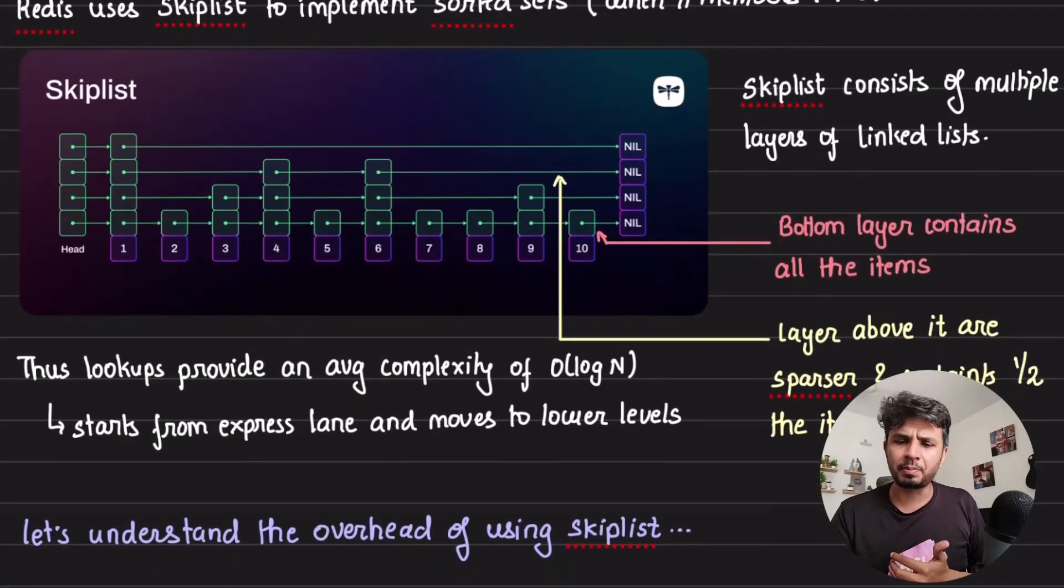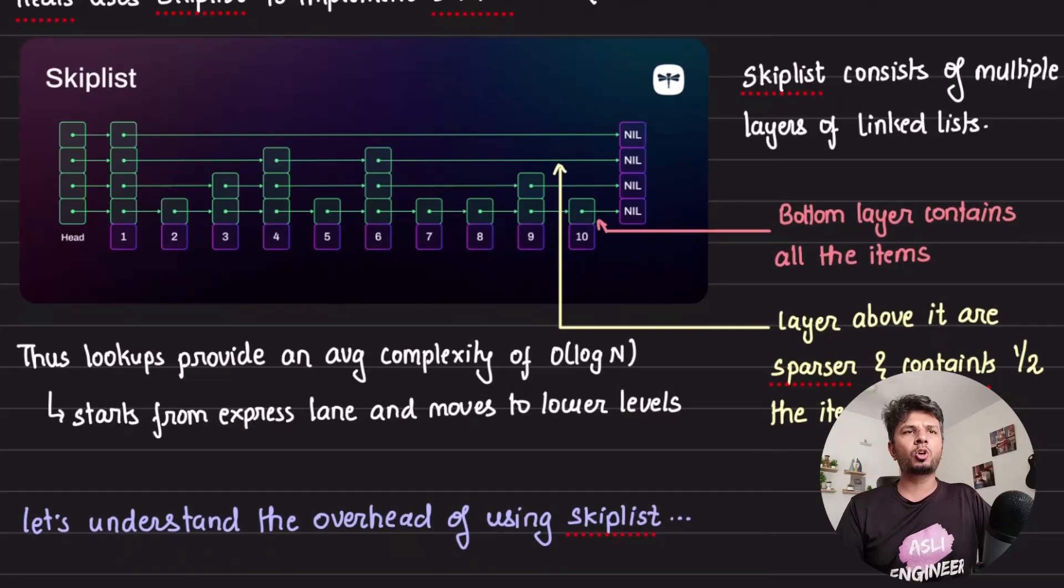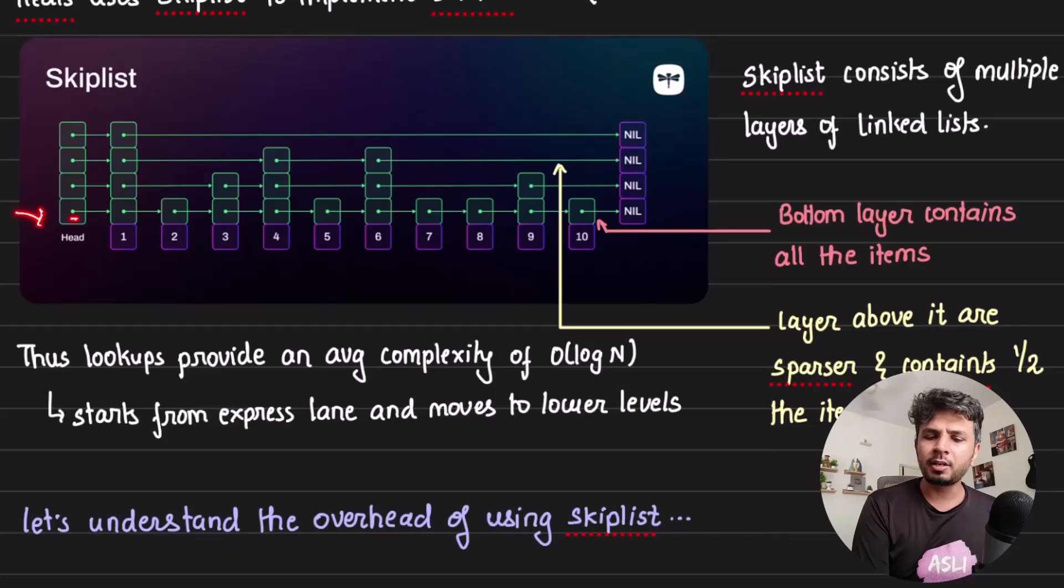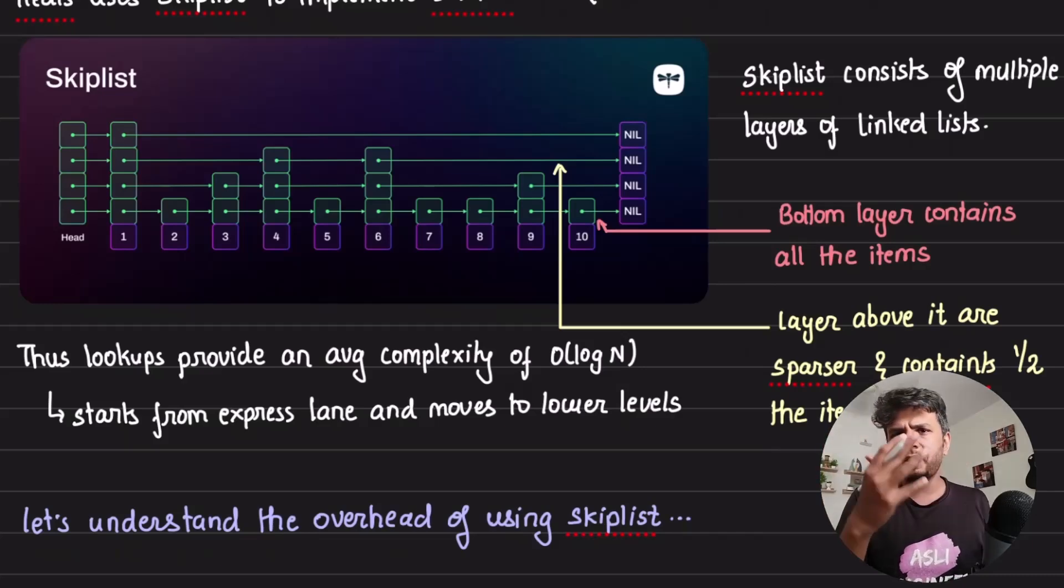Skip list as a data structure implementation is very common to implement sorted sets. The whole idea is that in a skip list you have a bottom layer where all the elements are stored in the form of a linked list. If you do a very naive implementation, your lookups become O(n), although your insertions are fast, which is not good because you need speed.